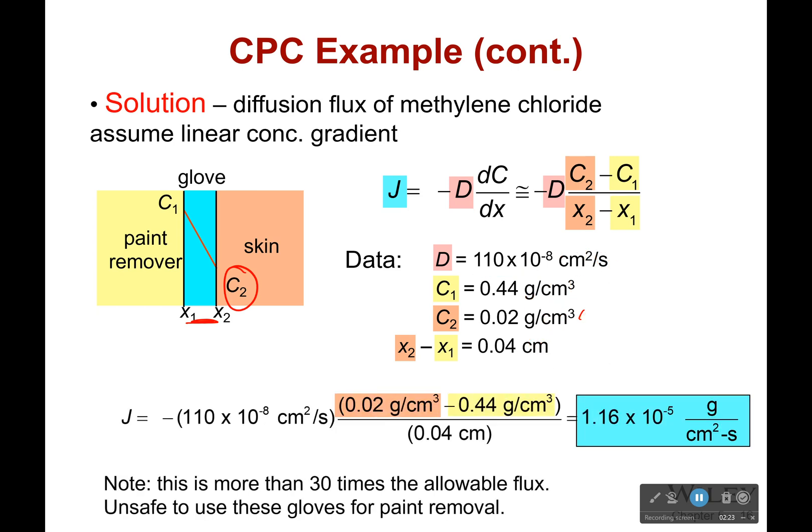So I plug it in and I get 1.16 times 10 to the negative fifth grams per centimeters squared per second. Now that's more than 30 times allowable flux and so those gloves would be very very unsafe to use in this case.